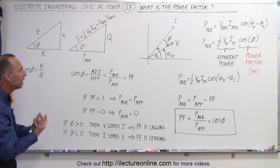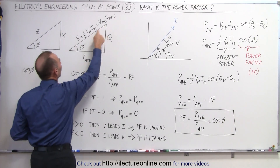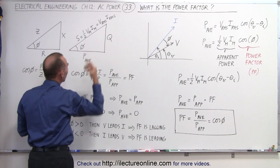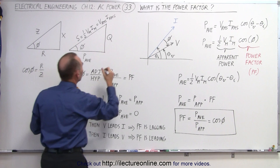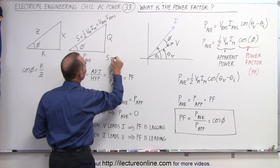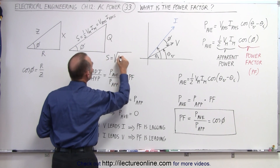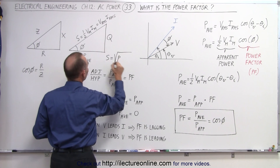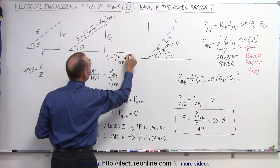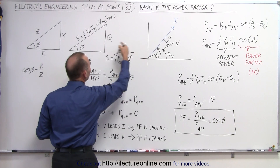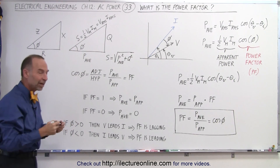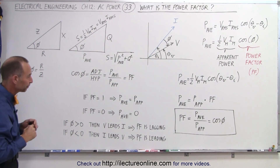We can see that the magnitude of the apparent power S is equal to the square root of the average power squared plus the reactive power squared. That relationship again ties back to the phase angle, which is related to the power factor.